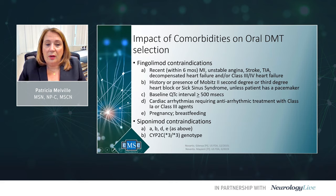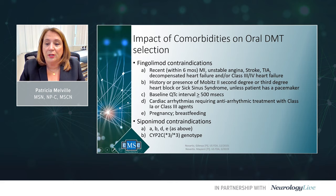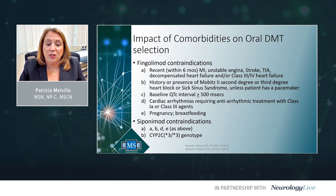For oral DMTs: Fingolimod is contraindicated in patients with recent MI within six months, unstable angina, stroke, TIA, decompensated or class 3/4 heart failure, Mobitz II second- or third-degree heart block or sick sinus syndrome (unless pacemaker), baseline QTc interval ≥500 ms, cardiac arrhythmias requiring antiarrhythmic treatment, and pregnancy or breastfeeding. Siponimod, the newest S1P receptor modulator, shares similar contraindications, and additionally requires CYP2C9 genotyping — patients with *3/*3 genotype are contraindicated. Teriflunomide is contraindicated in severe hepatic impairment, concurrent use of leflunomide, active hepatitis or tuberculosis, and pregnancy or breastfeeding. Cladribine is contraindicated in patients with current malignancy, active chronic hepatitis or tuberculosis, HIV, and pregnancy or breastfeeding.